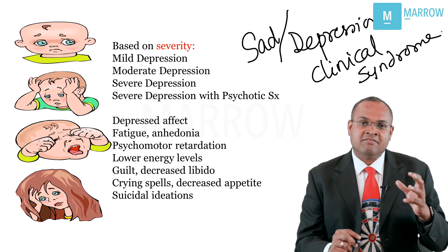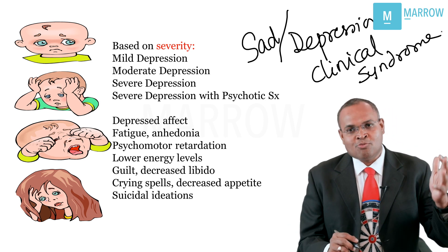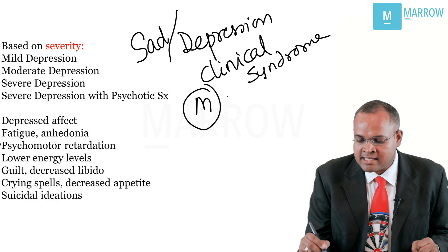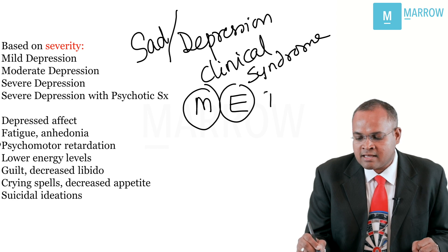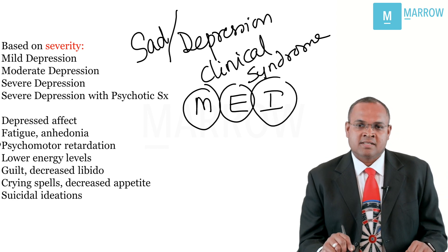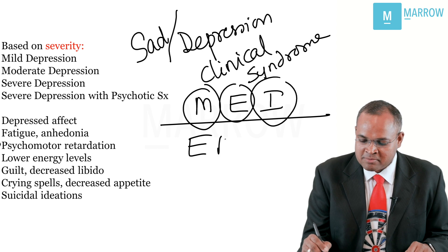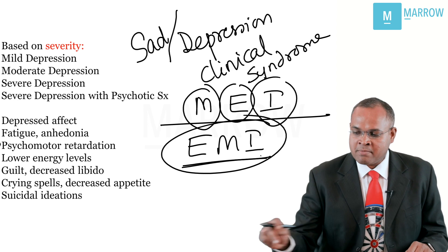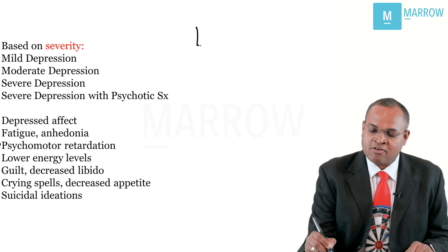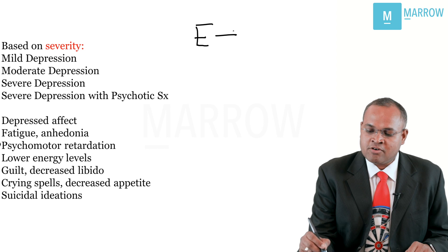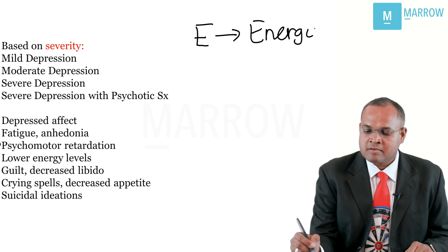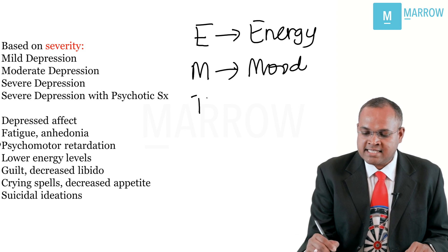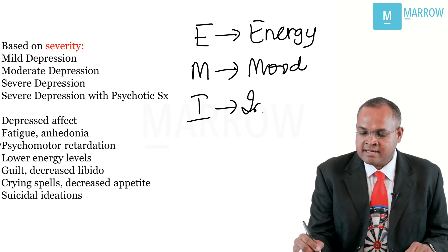Typically people believe depression to be a low mood state, but it is important to understand depression is EMI — an EMI problem. In today's world we can make it into an EMI problem since most of us have installments to pay. EMI stands for: E stands for Energy problem, M stands for Mood problem, and I stands for Interest problem.